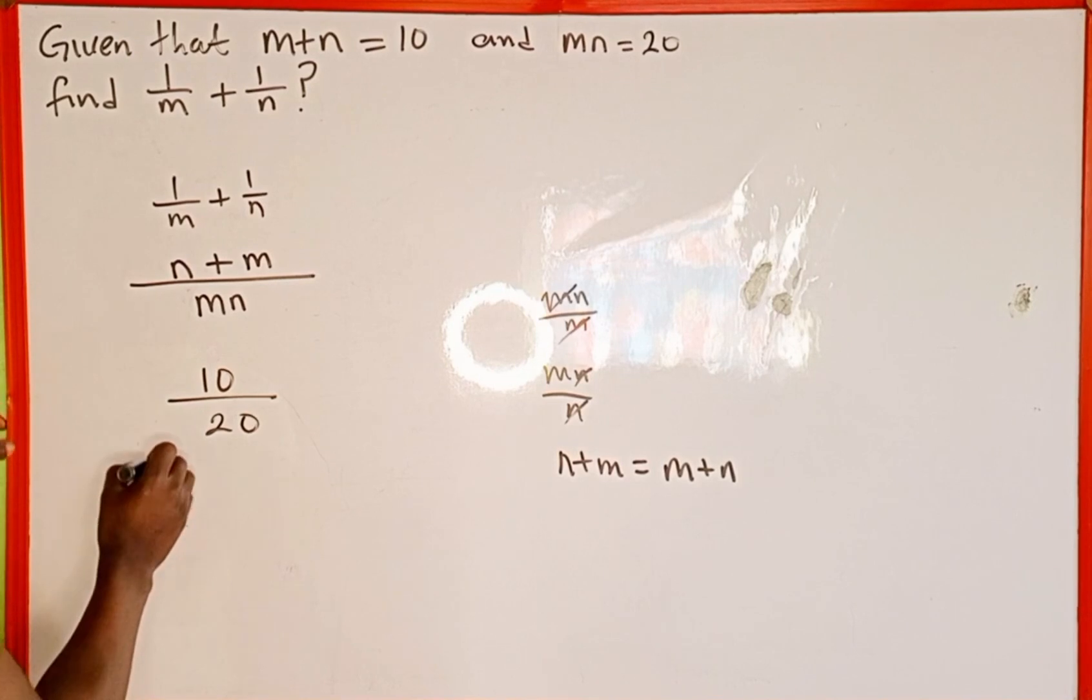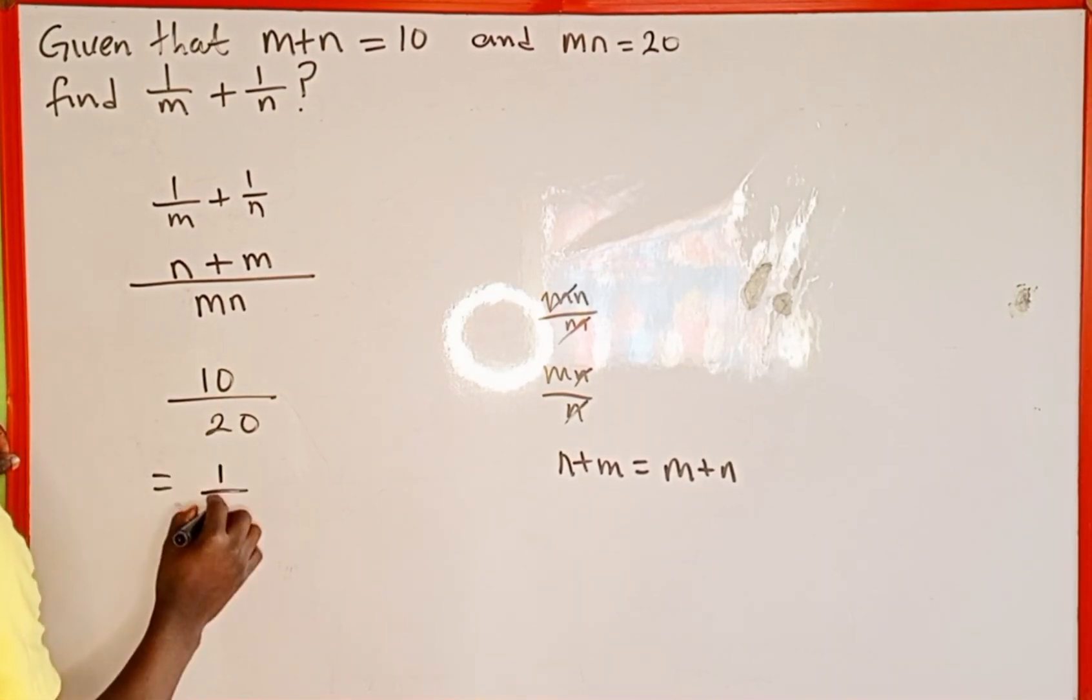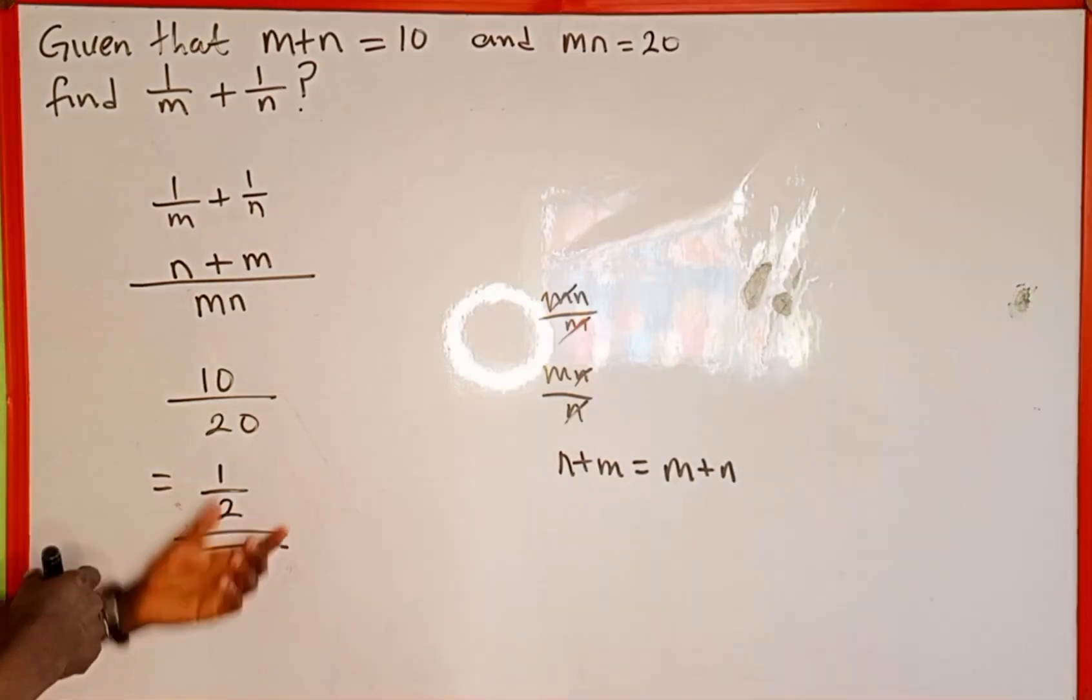Now we reduce this fraction. 10 goes into 10 one time, and 10 goes into 20 two times. So 1 over 2 is our answer.